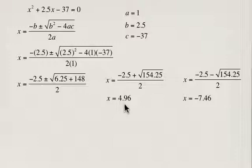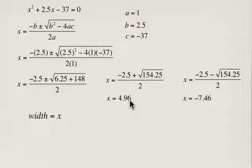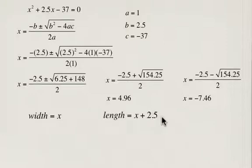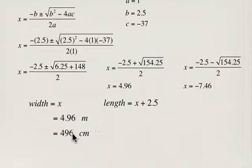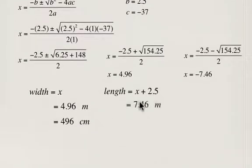The reason we round to two decimal places is because this is in meters, and we're rounding to the nearest one-hundredth of a meter, which corresponds to centimeters. So the width is x equals 4.96 meters, which is 496 centimeters. The length is x plus 2.5 equals 7.46 meters, which is 746 centimeters. In both cases we've rounded to the nearest centimeter.